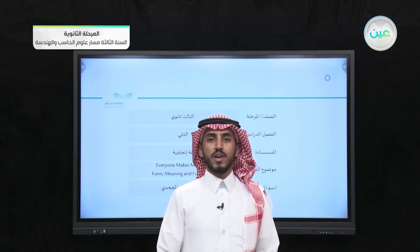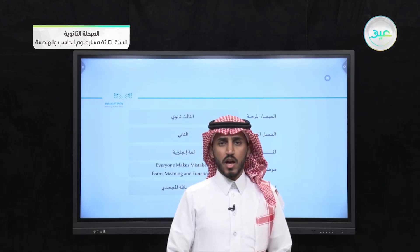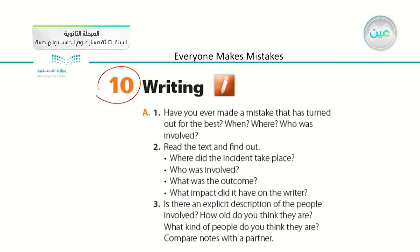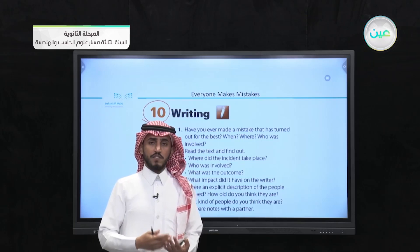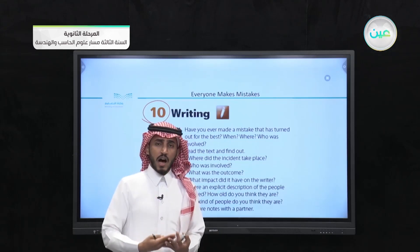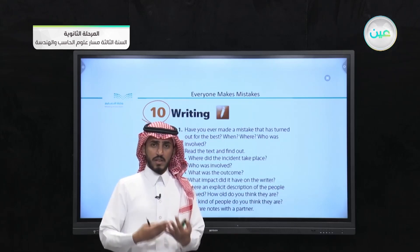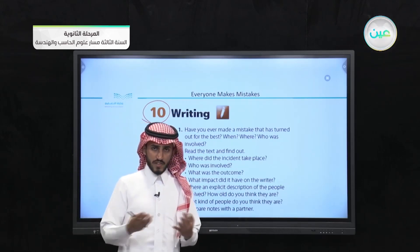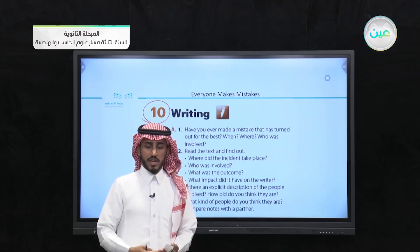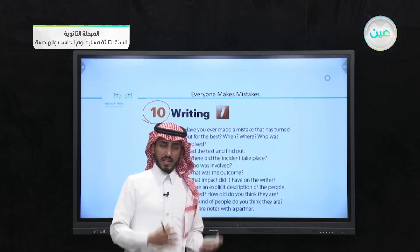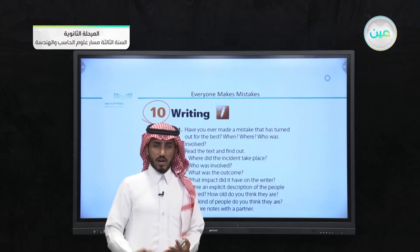As-salamu alaykum. Hello everyone. Today we have another lesson in Mega Goal 6. In the previous lesson, we had writing. In this writing lesson, we talked about the mistakes. As we all know, this unit is about everyone makes mistakes. The theme of this unit is about making mistakes and how mistakes sometimes lead to happy accidents or happy consequences or results.